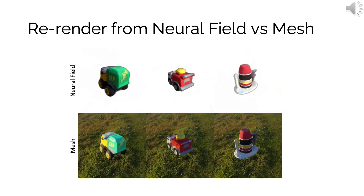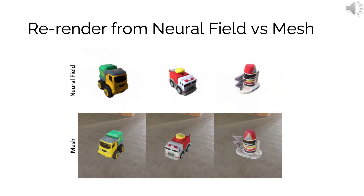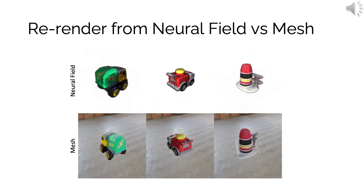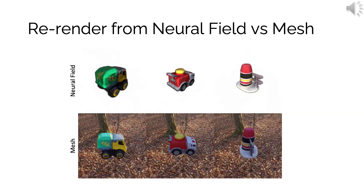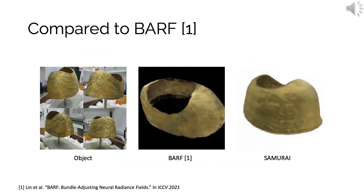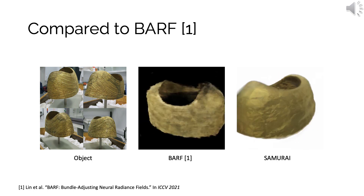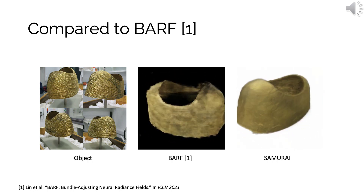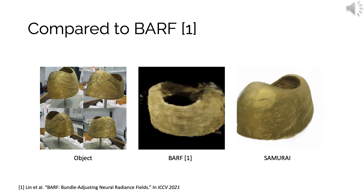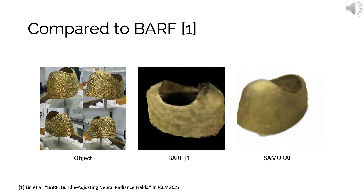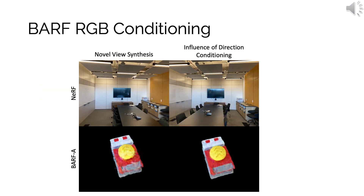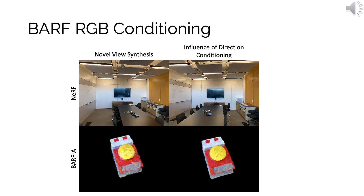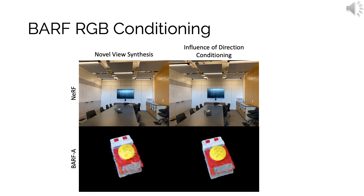We now show some results. Here, we show the quality of our meshes compared with renderings directly from the neural field. As seen, our mesh extraction process does not degrade the quality. Compared with BARF, a recent state-of-the-art method in joint refinement of camera pose and radiance fields, our method can produce better reconstructions. Our advantage stems from the explicit material decomposition.